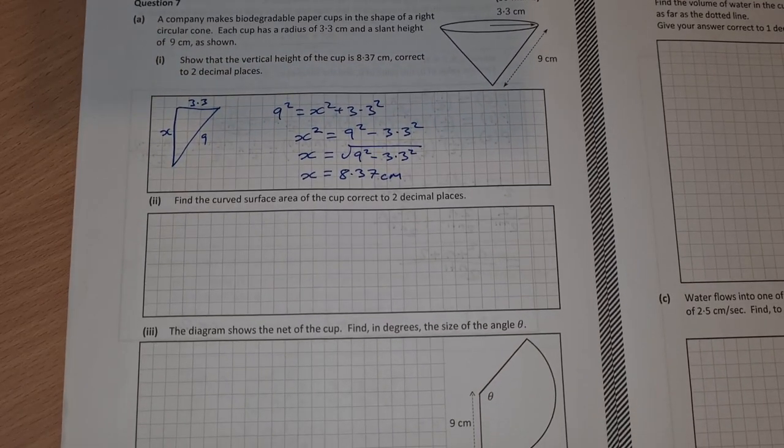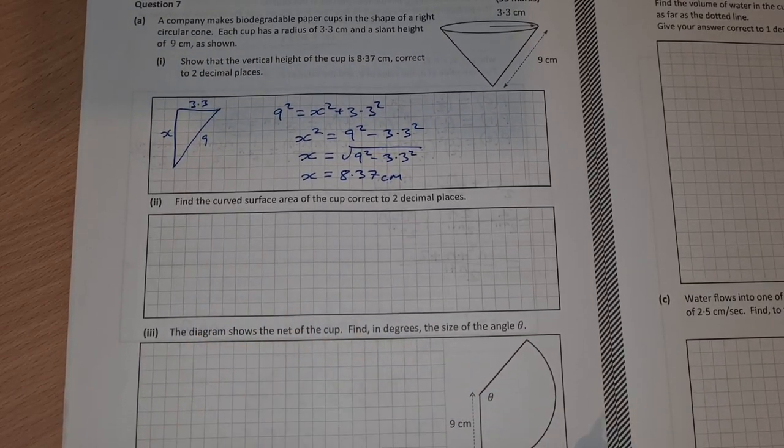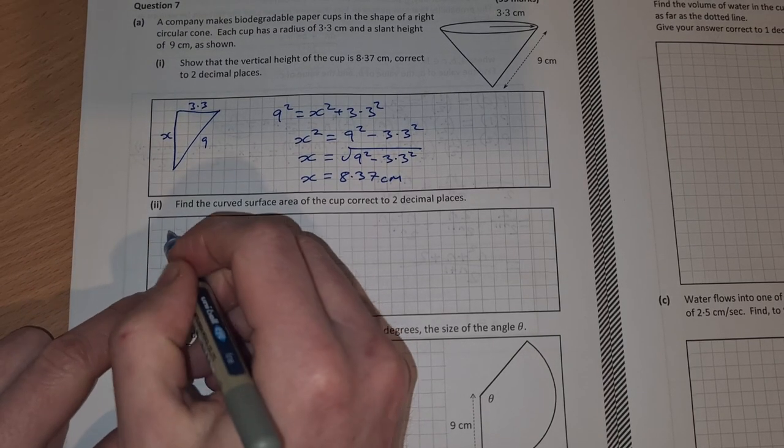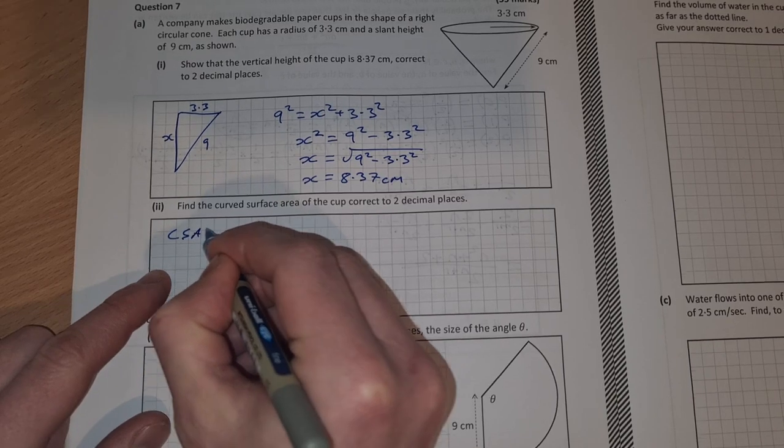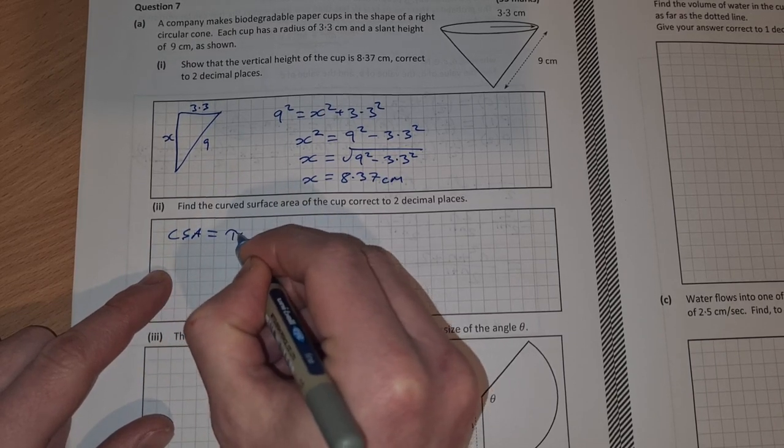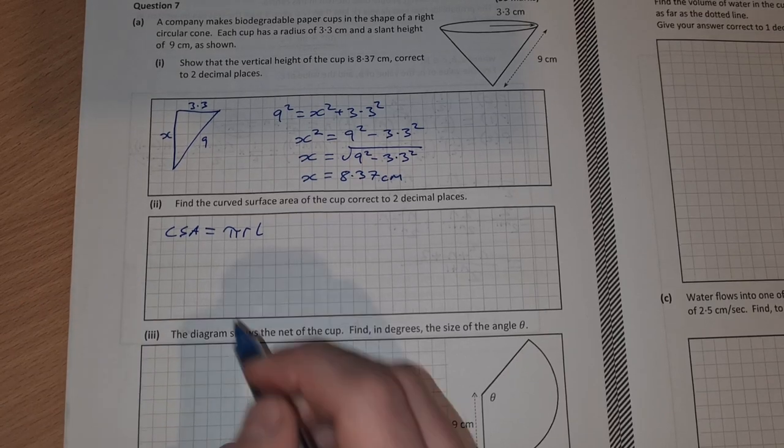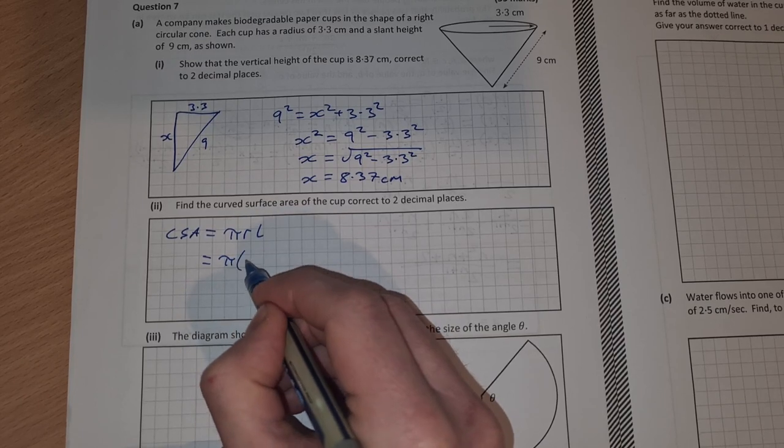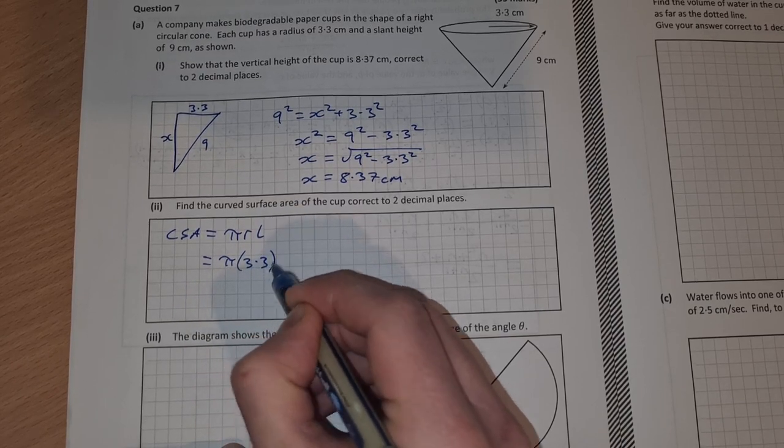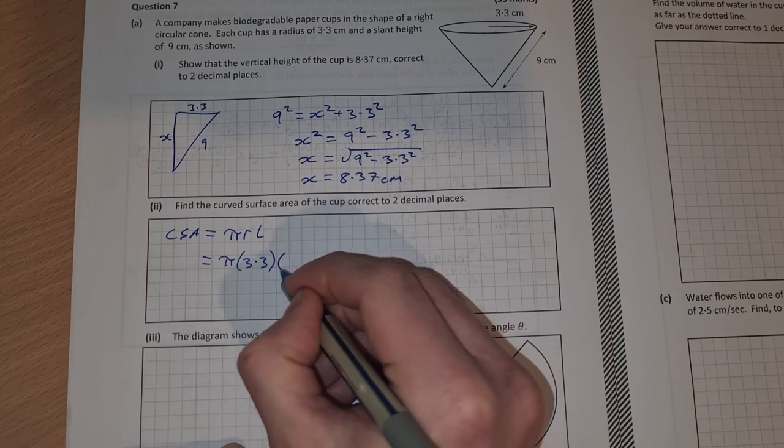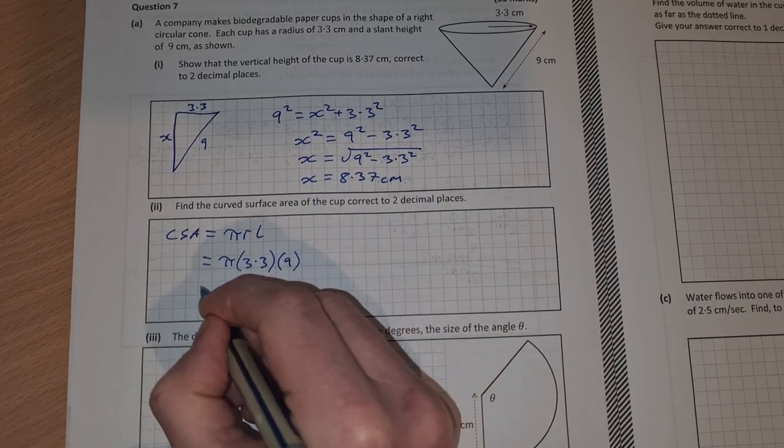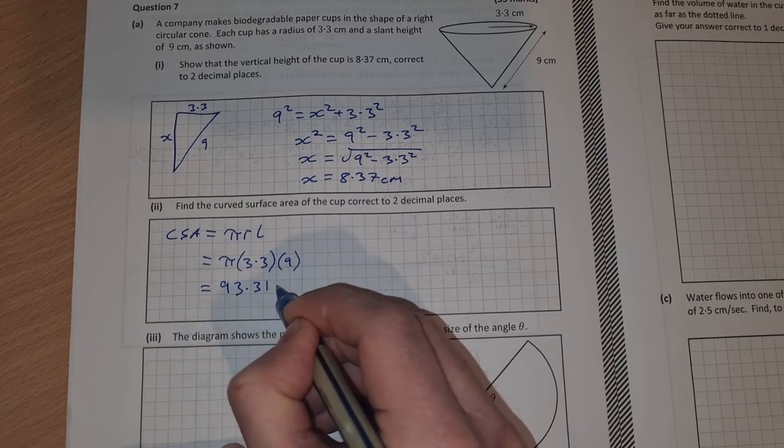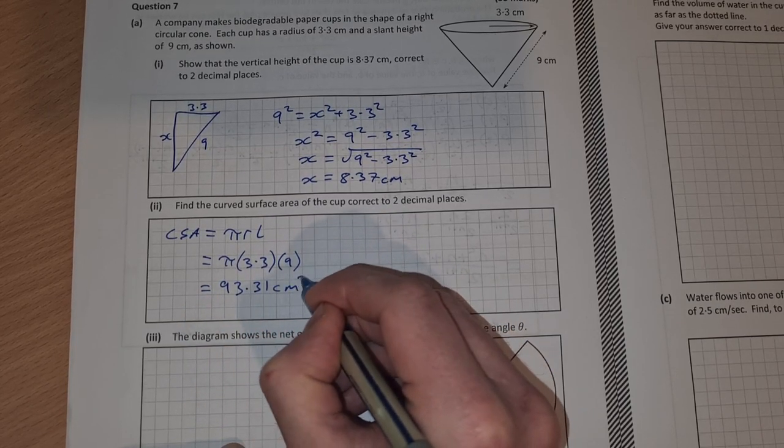Part 2. Find the curved surface area of the cup correct to two decimal places. The curved surface area of a right circular cone is equal to πrl. That's equal to π times the radius which is 3.3 and l is our slant height which is 9. So π times 3.3 times 9 is 93.31 and the units are square centimeters.